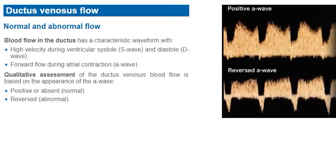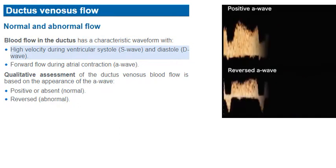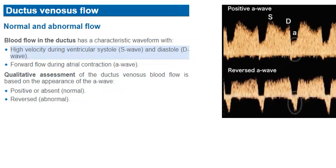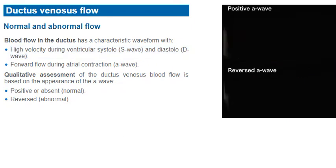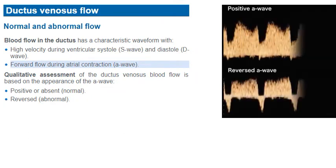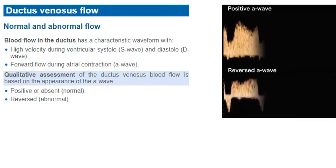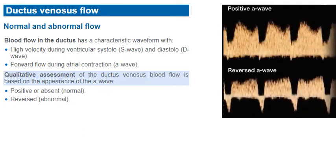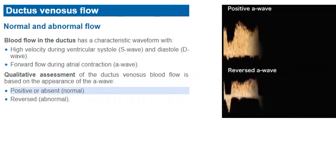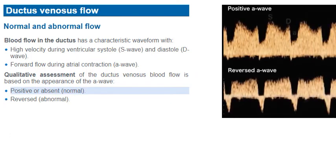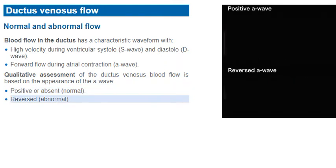Blood flow in the ductus has a characteristic waveform with high velocity during ventricular systole (the S wave) and diastole (the D wave). There is also forward flow during atrial contraction, the A wave. In screening for chromosomal abnormalities, qualitative assessment of the ductus venosus blood flow is based on the appearance of the A wave, which is classified as normal if the A wave is positive or absent, and abnormal if the A wave is reversed.